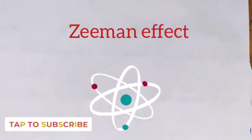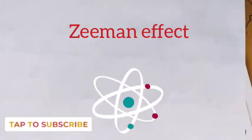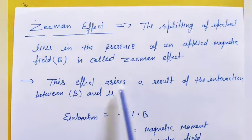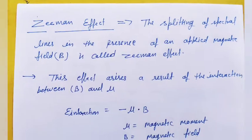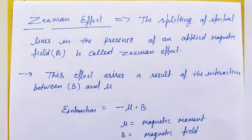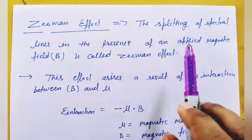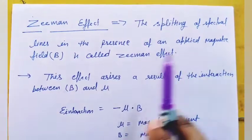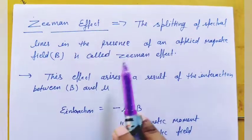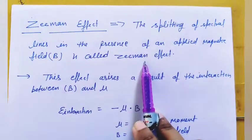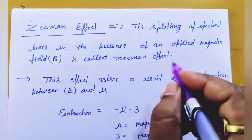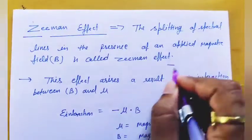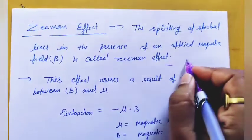Hi everyone, welcome to my YouTube channel. Today's topic is the Zeeman effect. The Zeeman effect is the splitting of spectral lines in the presence of an applied magnetic field — the spectral lines split when a magnetic field is applied.